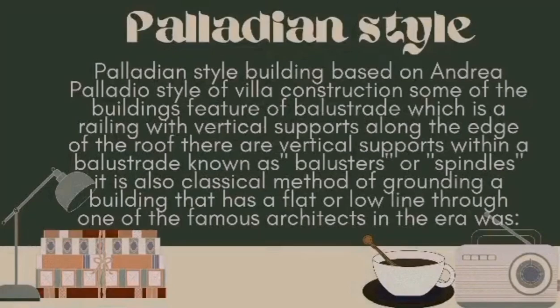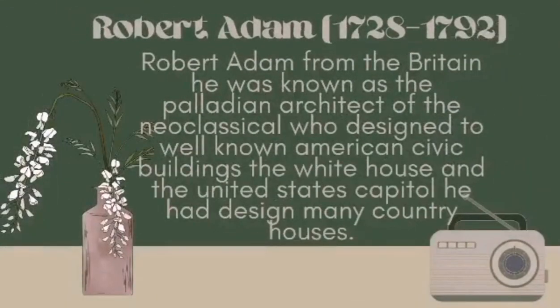Palladian style buildings are based on Andrea Palladio's style of villa construction. Some of the buildings feature a balustrade, which is a railing with vertical supports along the edge of the roof. The vertical supports within a balustrade are known as balusters or spindles. It is also a classical method of grounding a building that has a flat or low-line roof. One of the famous architects in this era was Robert Adam from Britain, known as the Palladian architect of the Neoclassical, who designed two well-known American civic buildings: the White House and the United States Capitol.